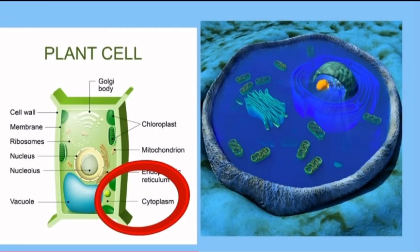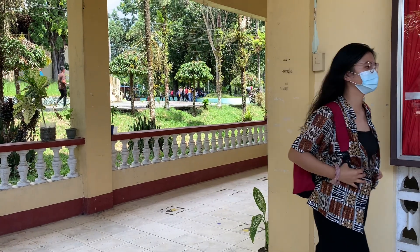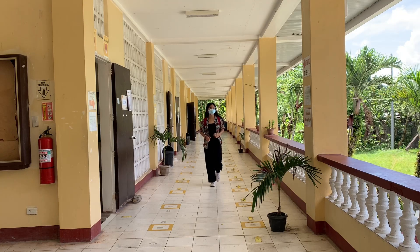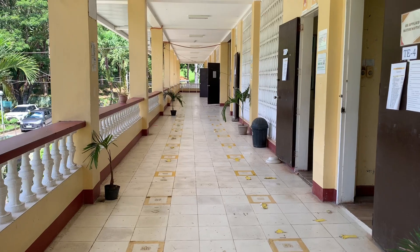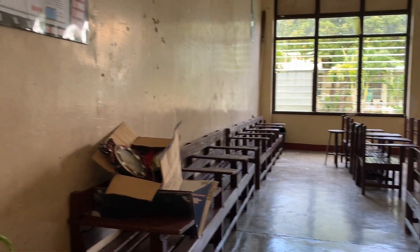The cytoplasm is the gel-like fluid inside the cell. It is the medium for chemical reactions and provides a platform upon which other organelles can operate within the cell. The cytoplasm is comparable to the hallways and classrooms of the campus in which everyone travels, representing the air that fills the gap within each space.